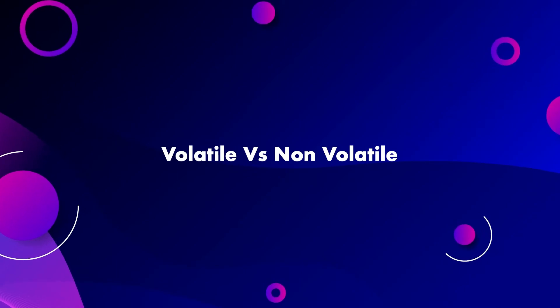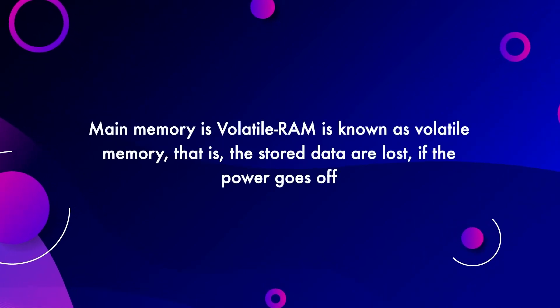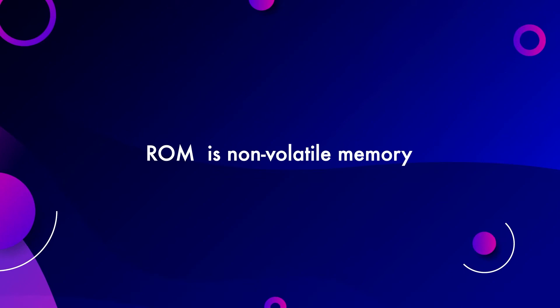As far as the concept of volatility and non-volatility is concerned, RAM is known as volatile memory because once the power supply is lost, the content of the RAM disappears. ROM is non-volatile because whatever is stored in ROM remains permanently. A CPU continuously interacts with RAM and interacts with ROM at the time of booting the machine.